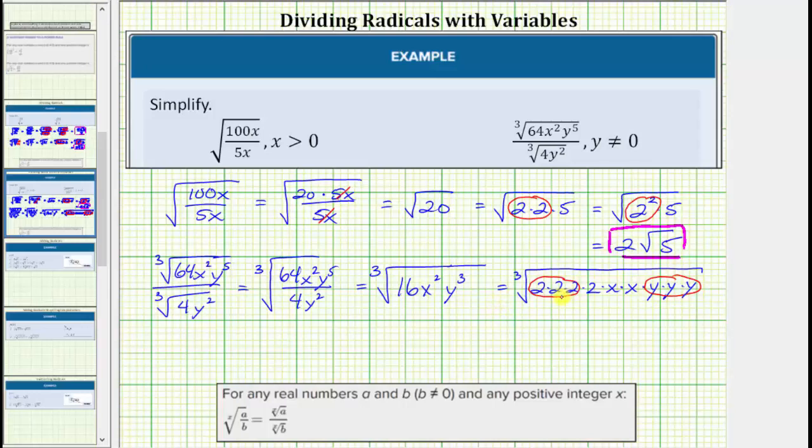Let's write this one more time using exponents before we simplify. Let's write this as the cube root of 2 cubed times 2 times the x squared, which will not simplify, times y cubed.